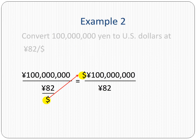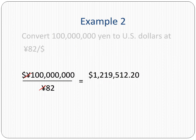By dividing, we just flip the dollar sign from the denominator of the denominator to the numerator—this is just a mathematical operation. The two yen signs cancel each other out, and we now wind up with a dollar amount.